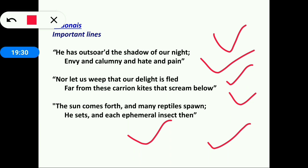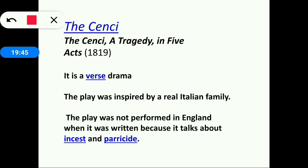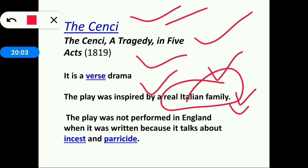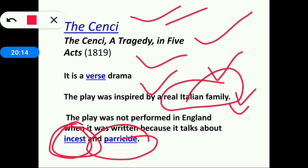The Cenci is a tragedy in five acts written in 1819. It is a verse drama inspired by a real Italian family — this is very important to remember. The play was not performed in England when it was written because it deals with incest (having a relationship with blood relatives) and parricide (killing one's father).